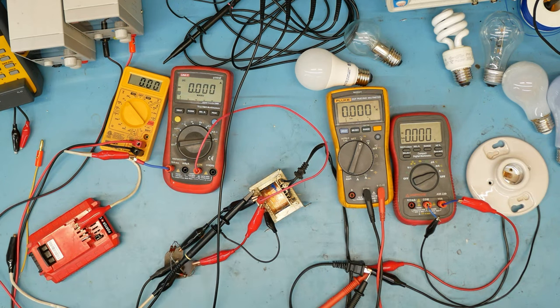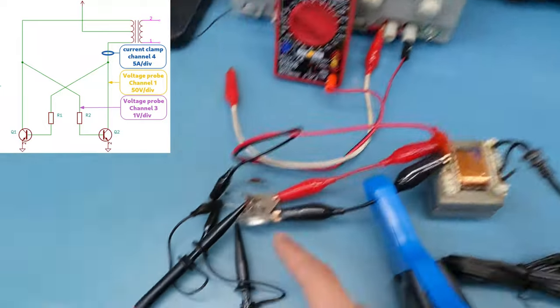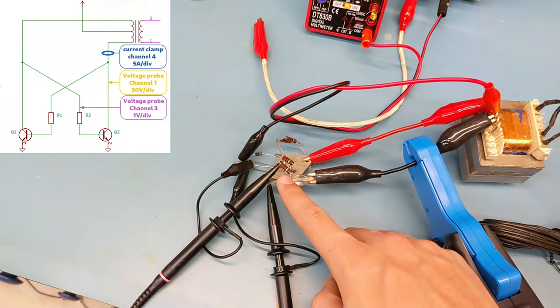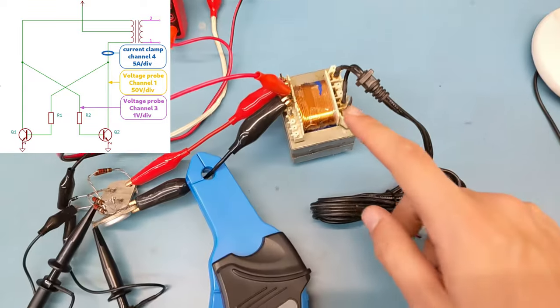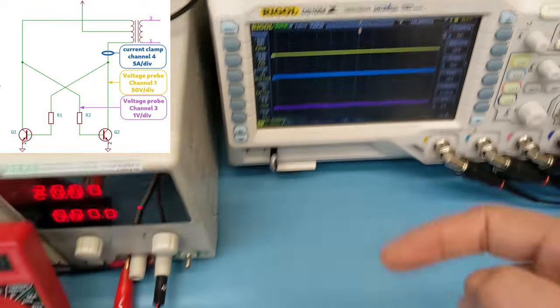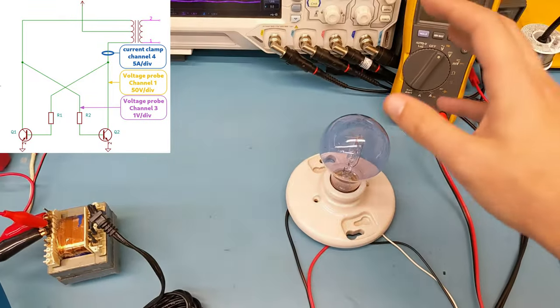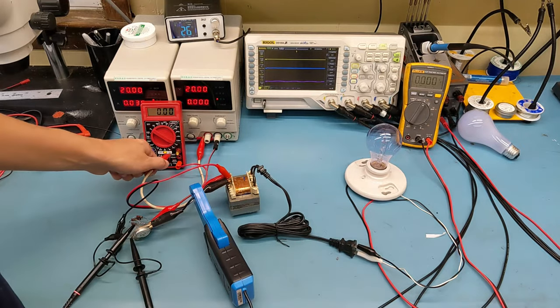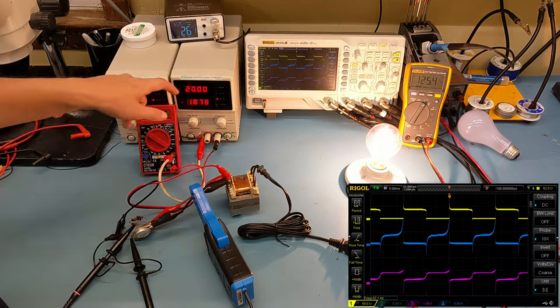We have the oscilloscope hooked up here. We are going to have the yellow trace hooked up to the collector of one of these transistors. We've got the blue trace in the middle here hooked up to this current clamp meter which is measuring the current on the primary side of the transformer. And lastly we have the magenta trace hooked up to the base of that same transistor.